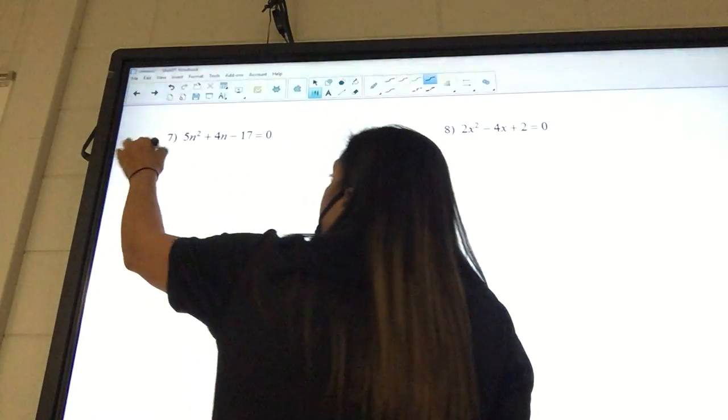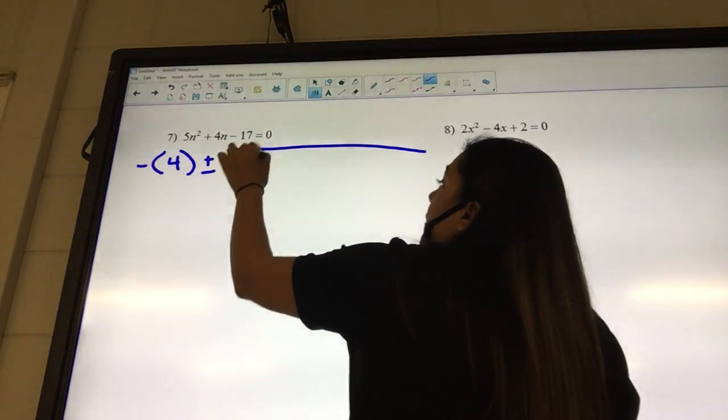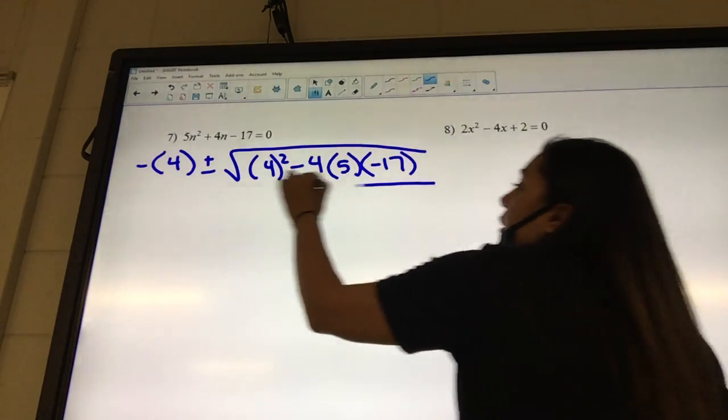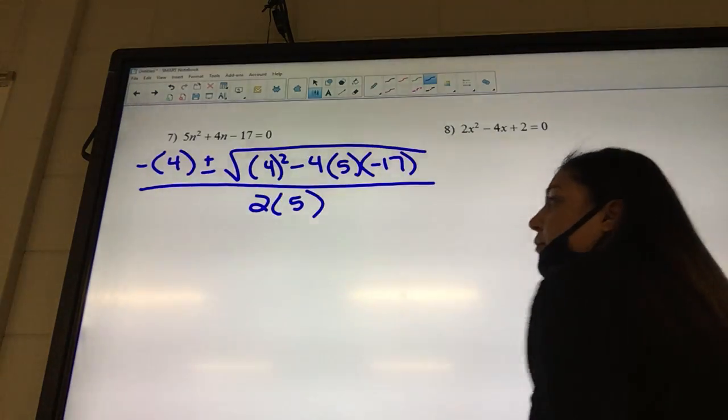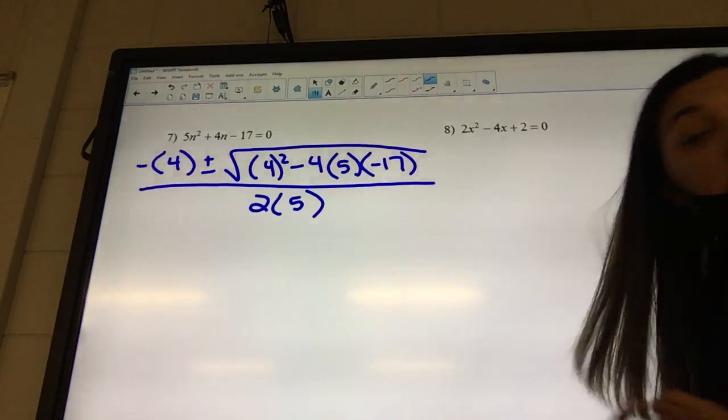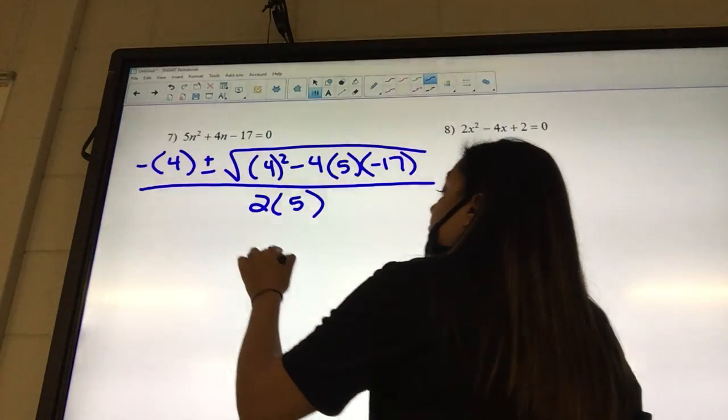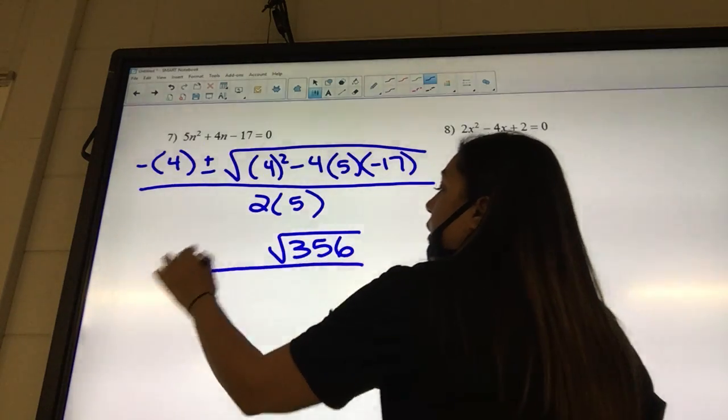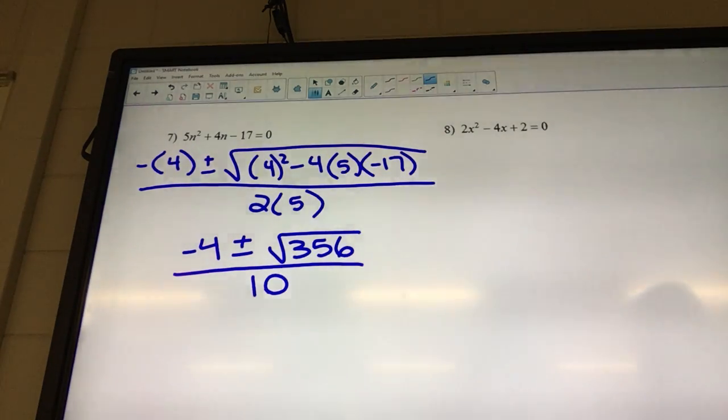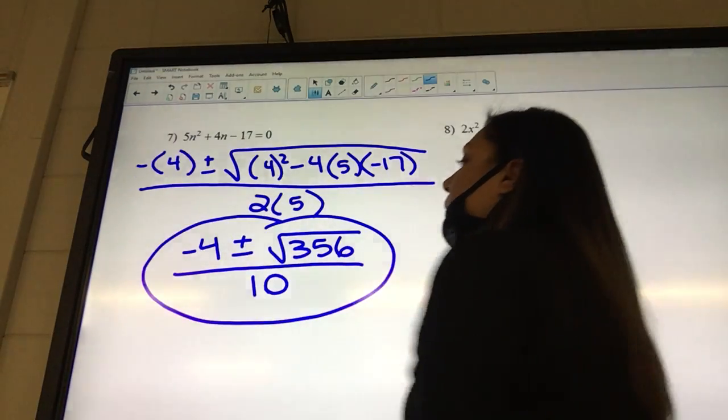Okay, 7. I'm going to have negative B plus or minus B squared minus 4 times our A times our C all over 2 times our A. It is 356. Somebody agree? Yes. Okay, so we're going to have square root of 356. What about the outside? Negative 4. Bottom? 10. Does square root of 356 simplify? No. Okay, so then that's it.